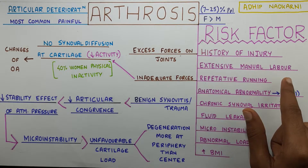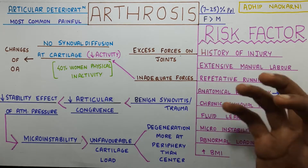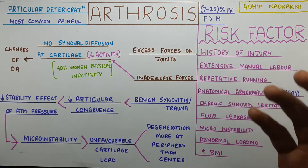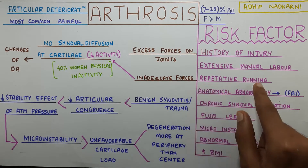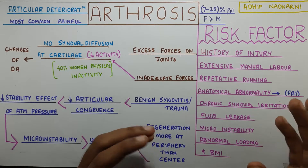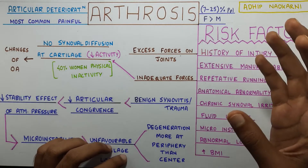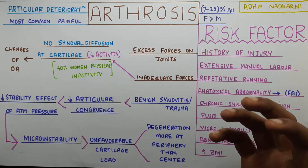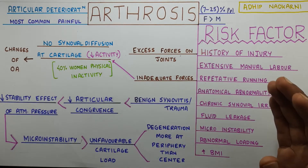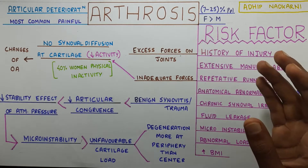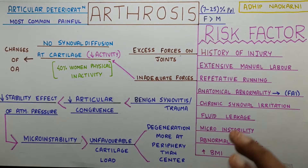The next one is extensive manual labor and also repetitive running — these go together. Excessive load on your hip joint can cause arthrosis. Don't get me wrong with running — running for recreational activity is really good for your hip joint or any other joints. It actually reduces the chances of arthritis, but excessive running or excessive loading at the hip joint can be one of the risk factors.